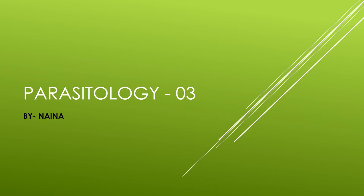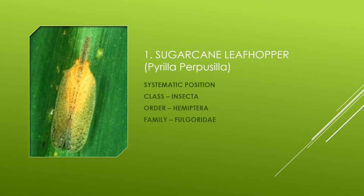Hello friends, I am here again with a new series of Parasitology 03. It's all about insect pests of sugarcane. First is sugarcane leafhopper. Its scientific name is Parilla purpucilla and its systematic position belongs to class Insecta, order Hemiptera, and family Fulgoridae.